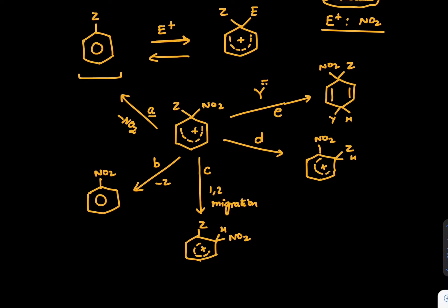So when we say Ipso substitution, basically what is happening? That the group which is going to join, E plus is going to join, and E comes and Z goes, and we have NO2 at this place. So these are all possibilities which can occur.